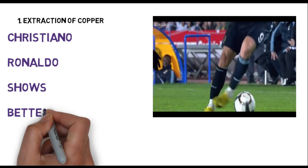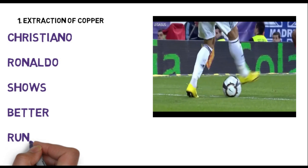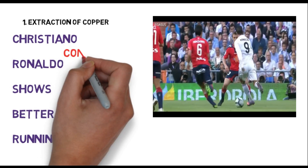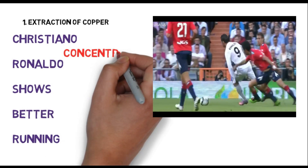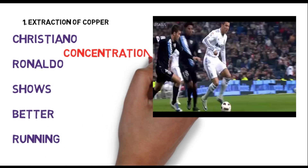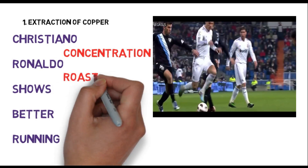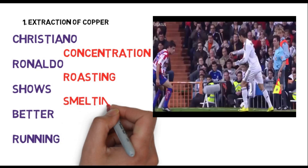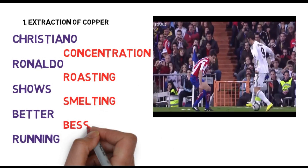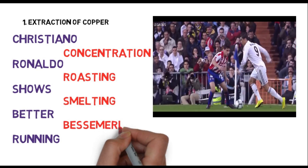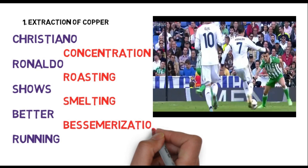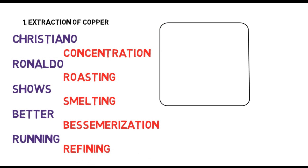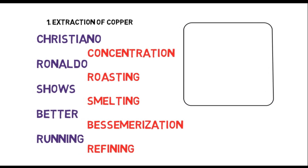Once again, remember the mnemonic: C.R.S.B.R. — C for Concentration, R for Roasting, S for Smelting, B for Bessemerization, and R for Refining. This is the important sequence for metallurgy. The second important question is about rusting.